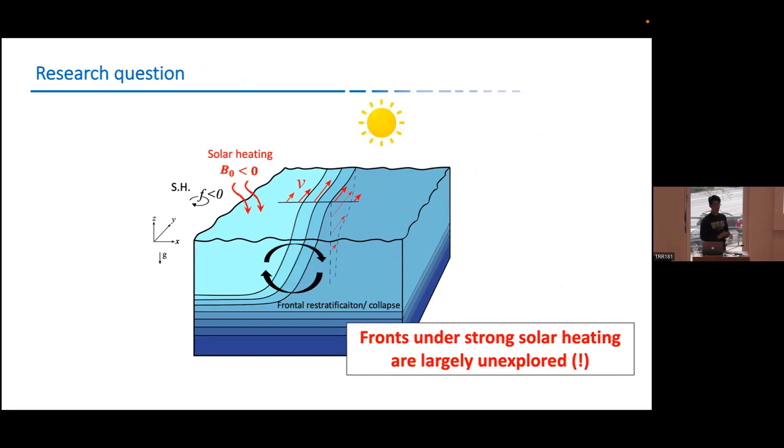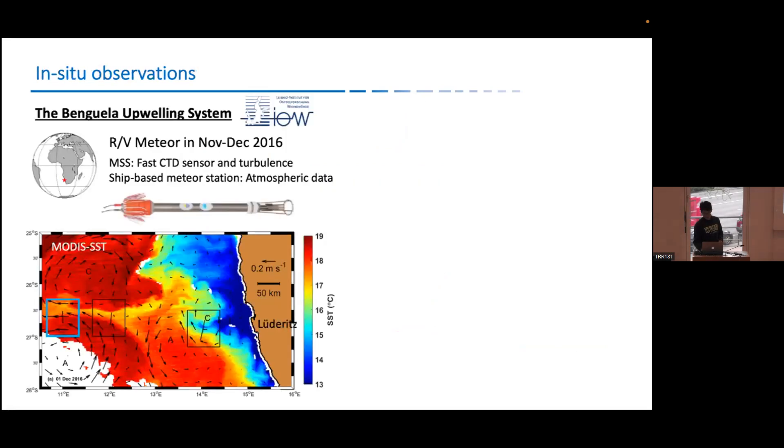However, people is largely ignoring the front during the day because they think if you have solar heating on top, the front is naturally collapsed because there is no forcing to sustain it either. And in the following, I'm going to tell you this is probably not right.